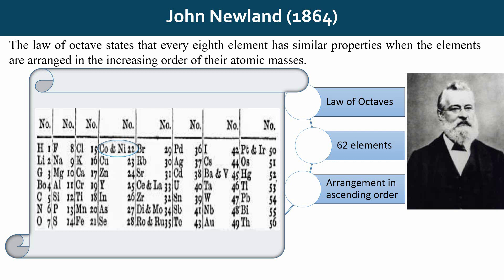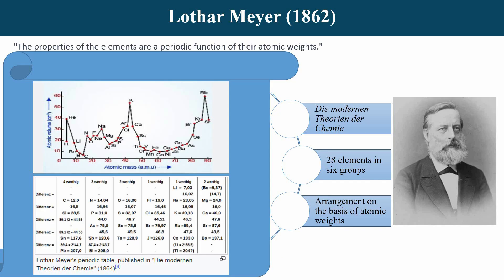Third, Newlands' Law of Octaves held true only for elements up to calcium. Elements with greater atomic mass could not be accommodated into octaves. In 1862, Lothar Meyer established his own periodic table which included 28 elements in 6 groups, and he first attempted to organize the elements based on their atomic volumes.